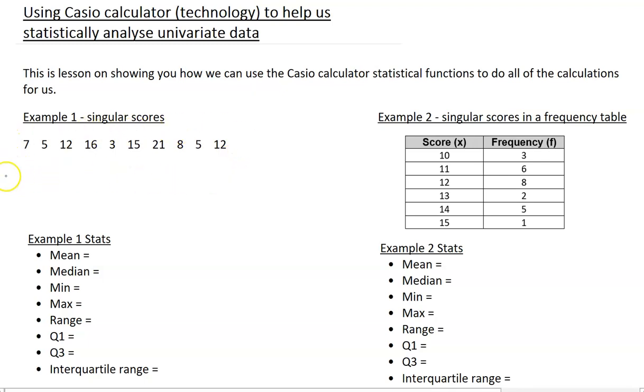One is just a group of singular scores and we're going to look at how to pop out those stats from the calculator, including the mean, median, min, max, range, Q1, Q3, and therefore the interquartile range. And then we're going to do the same thing for a set of scores in a frequency table.